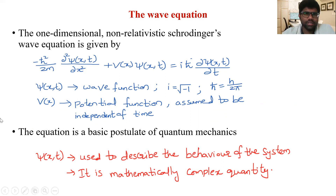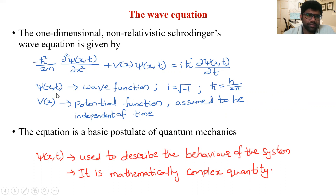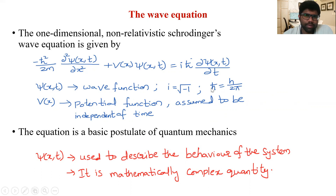The general form of Schrödinger's wave equation is: minus ℏ² / 2m · ∂²ψ(x,t)/∂x² + V(x)·ψ(x,t) = iℏ · ∂ψ(x,t)/∂t. Here ψ(x,t) is the wave function, i is the square root of minus one, and ℏ is the reduced Planck constant, equal to h / 2π.